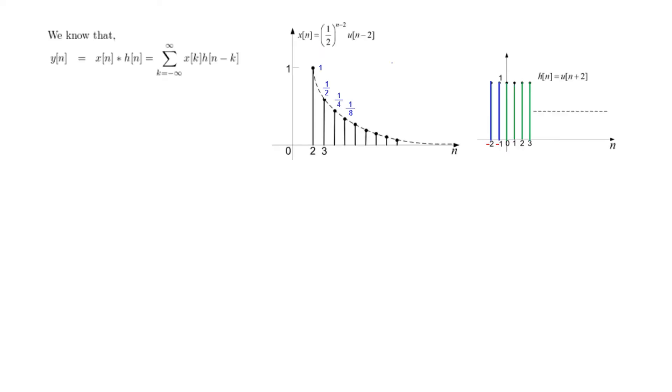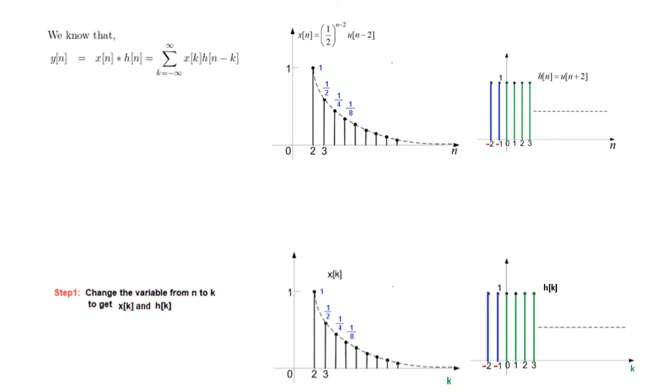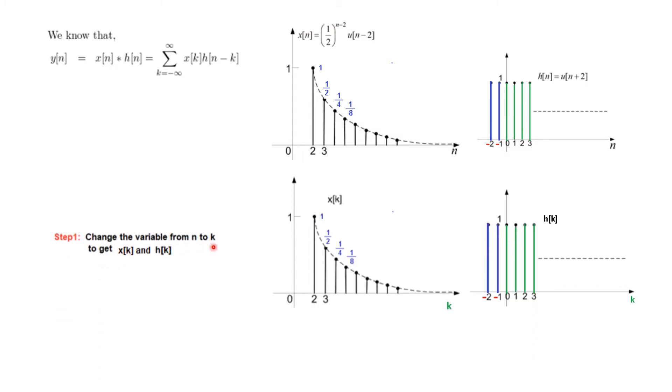So this is the given question. This is x[n] and this is h[n] and we have to find that convolution. As I have explained in my previous videos, our first step is to change the variable from n to k to get x[k] and h[k]. So we change the variable n into k. x[n] will now become x[k] and h[n] will now become h[k].